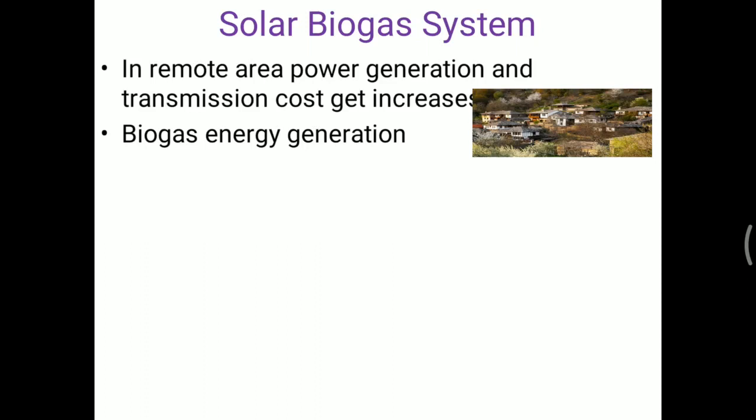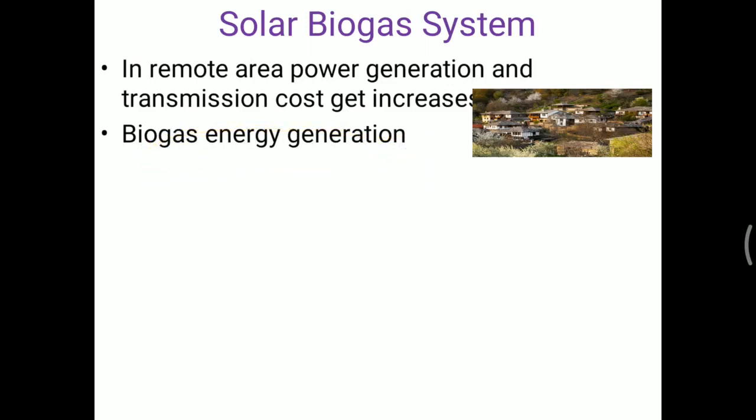The raw materials available in remote areas include animal waste, agriculture waste, and human waste. From these materials in maximum quantity, we can generate biogas. The biogas plant uses this raw material, and the byproduct of the biogas plant is fertilizer, which is useful for organic farming. The biogas plant can be installed at community or individual level.